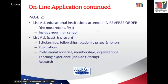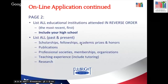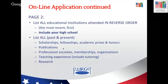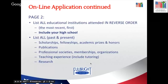On page two, list all educational institutions in reverse order — most recent first — and include your high school. You also have to list all scholarships, fellowships, academic prizes, and honors you have received — that is what separates one student application from the next. If you don't have any, don't fabricate any. If you are at the PhD level and have publications, include them along with the journal names. List any professional society memberships, teaching experience, tutoring or mentoring, and any research involvement.